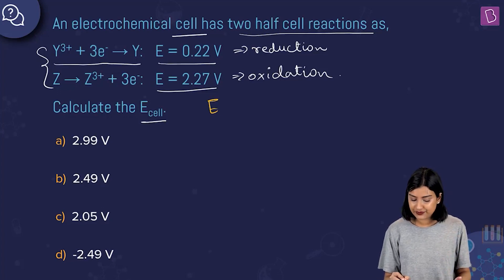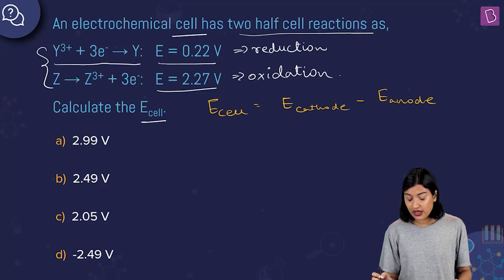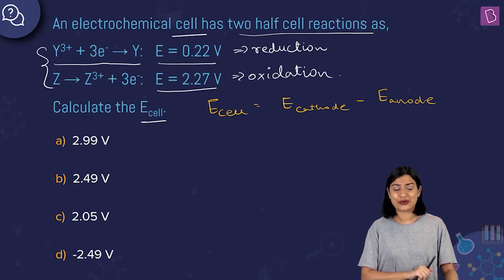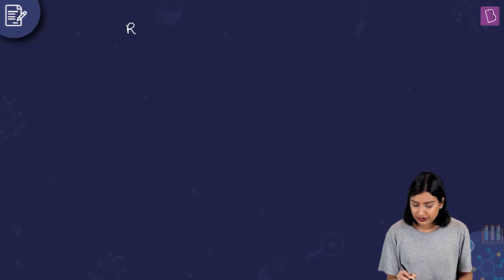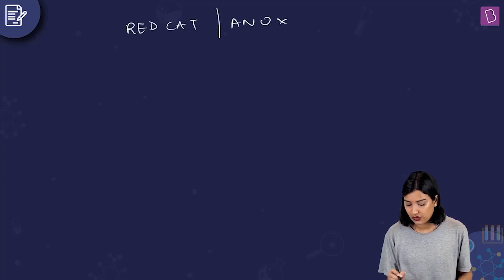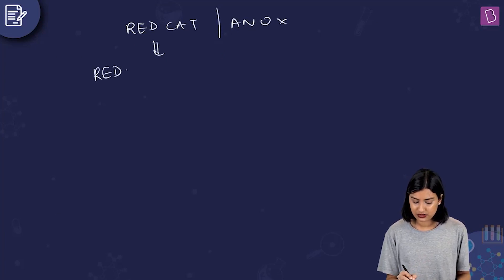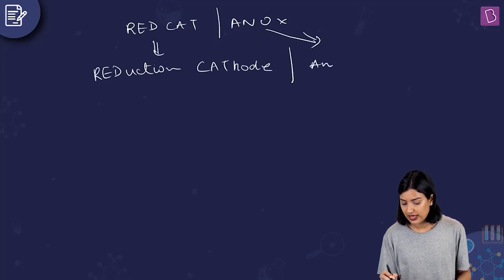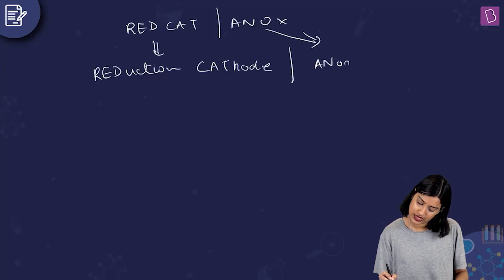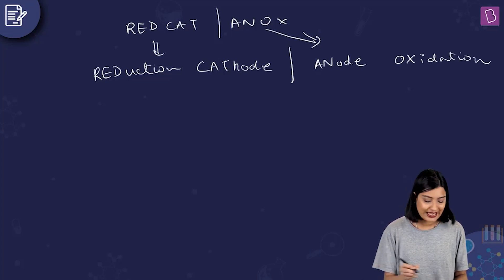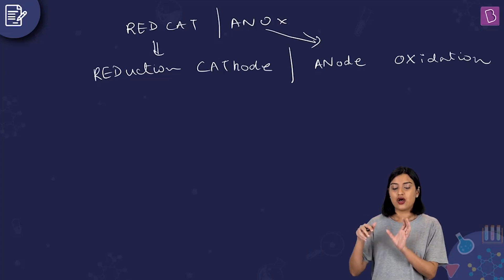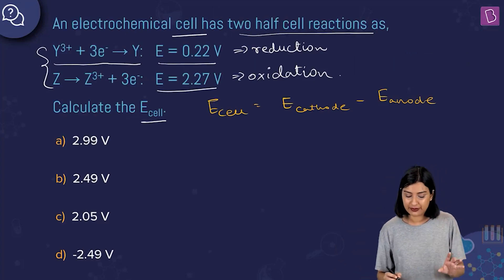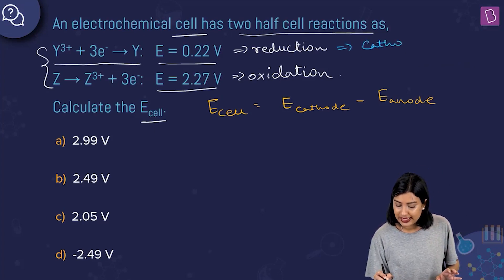E_cell equals E_cathode minus E_anode. Since cathode and anode aren't explicitly labeled, we use the mnemonic 'Red Cat, Ox An': reduction happens at the cathode, oxidation happens at the anode. So the first reaction (reduction) is at the cathode, and the second reaction (oxidation) is at the anode.